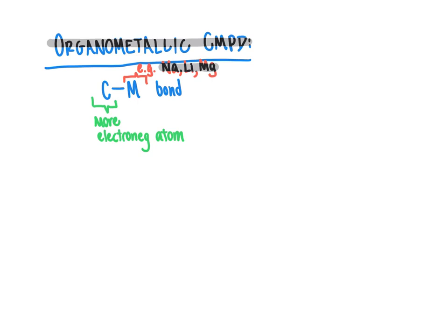When we think about the electronegativity of carbon relative to any of these metals, carbon is going to be the more electronegative atom by a significant margin. And so what's going to happen is if we think about the polarization of the carbon-metal bond,